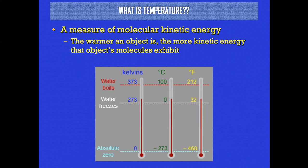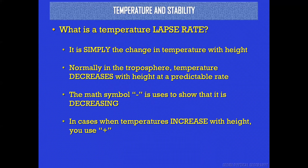Temperature is a measure of the molecular kinetic energy in a substance — liquid, metal, air. The warmer an object is, the more kinetic energy its molecules have. The temperature lapse rate is simply the change in temperature with height. Imagine sending a balloon up that reports temperature every 100 meters — you can graph that lapse rate. If it's getting colder you draw it as negative; if it's getting warmer with height, you draw it as positive.